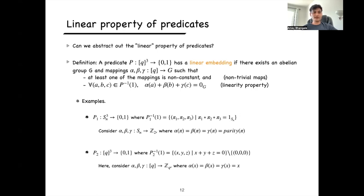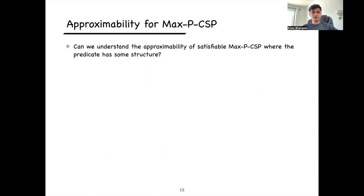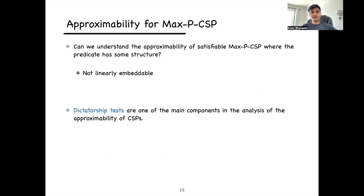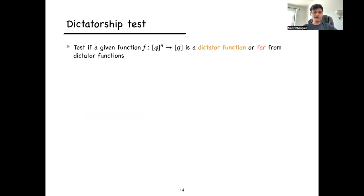Now the question is: can we understand the approximability of satisfiable max CSPs where the predicate is not linearly embeddable? To show hardness results, one of the main components is dictatorship tests. A function f mapping q^n to q is a dictator function if f(x_1,...,x_n) = x_i for some fixed coordinate i. Given oracle access to such a function, the goal is to decide if f is a dictator or far from any dictator, by querying f at few locations.